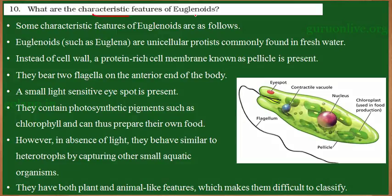What are the characteristic features of euglenoids? Let us learn the characteristic features of euglenoids. Euglena is an example. These organisms are unicellular in nature, meaning they are made up of a single cell, and they belong to the kingdom Protista. They are commonly found in freshwater.